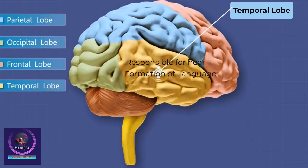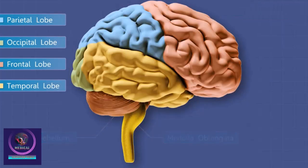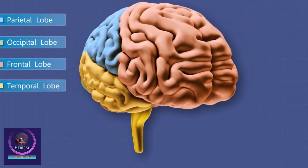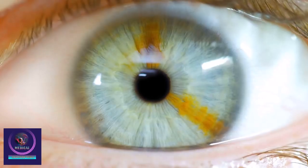The temporal lobe sits below the parietal lobe and is responsible for your ability to hear, the formation of language, your memory, and some emotions. It is also responsible for your sense of smell. Your occipital lobe is responsible for your ability to see.